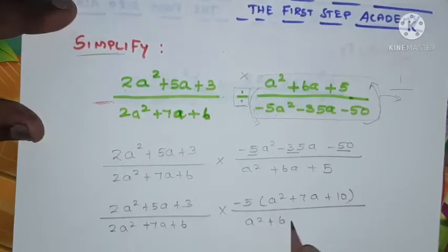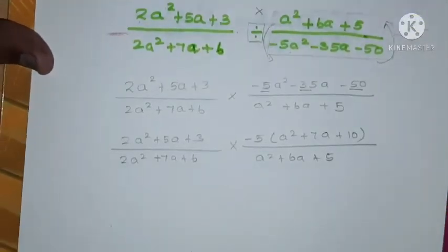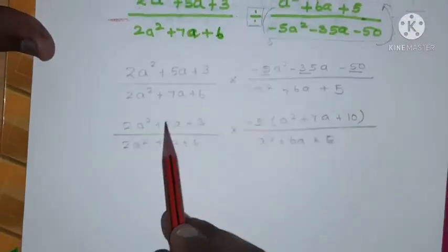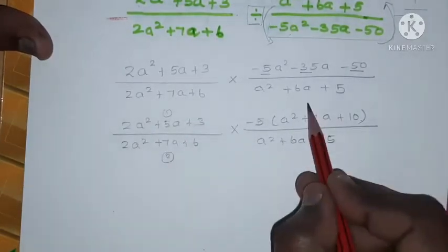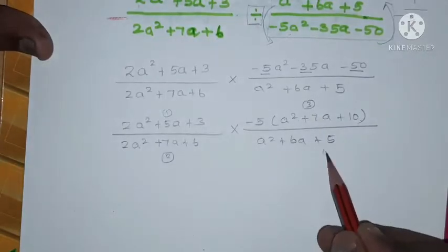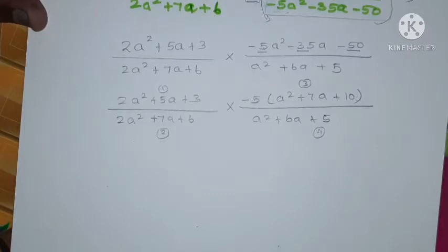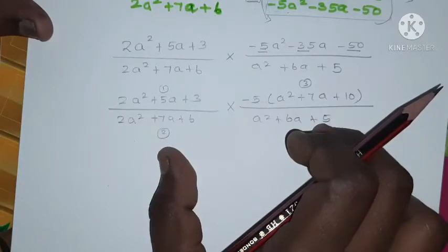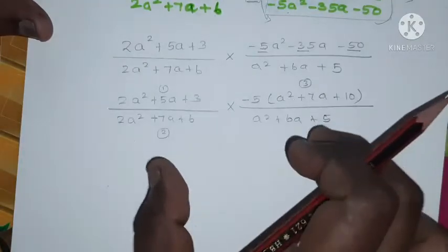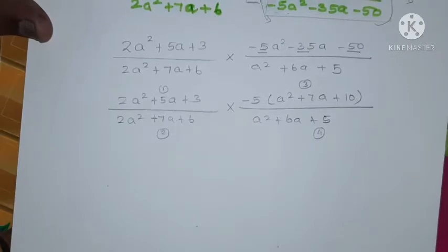Divided by a squared plus 6a plus 5. Now we have 4 polynomials: this is polynomial 1, this is polynomial 2, this is polynomial 3, and this is polynomial 4. We are going to find the factors of these 4 polynomials, substitute them in the respective places, and find the answer.